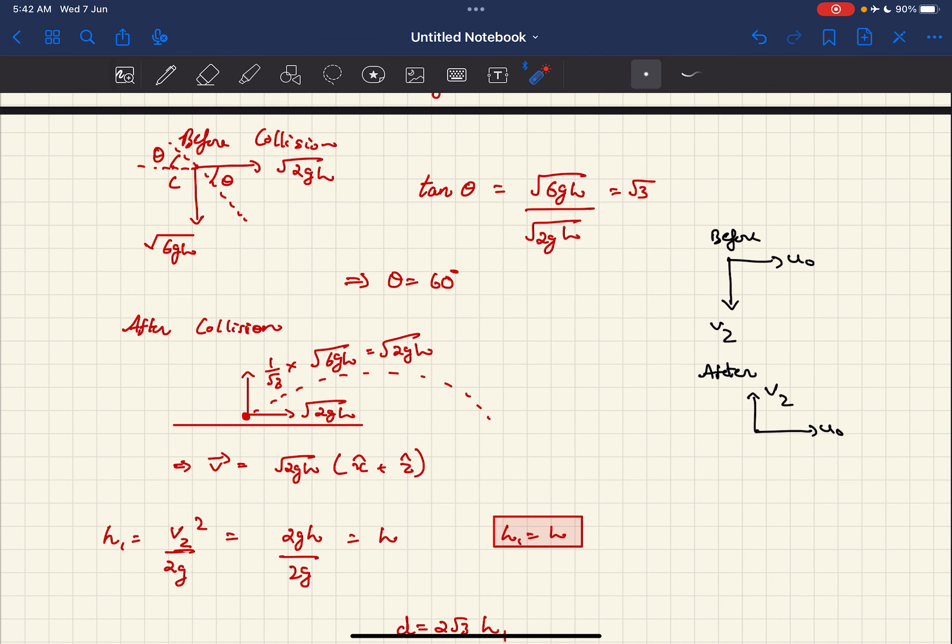Just before the collision, we need to find this angle theta that the velocity vector makes with the horizontal. We can simply do this by finding tan theta. We just calculated VZ to be √(6GH), so VZ upon VX would be tan theta. Tan theta comes out to be √3, which means theta is 60 degrees, which is option C.